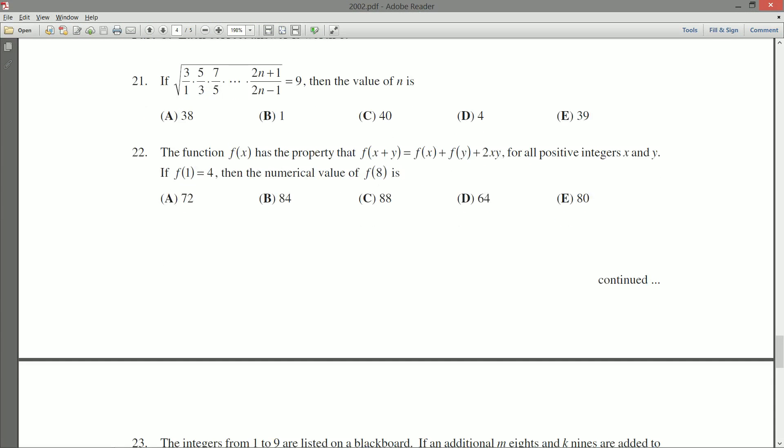The function f of x has the property that f of x plus y is f of x plus f of y plus 2xy for all positive integers x and y. If f of 1 is equal to 4, then the numerical value of f of 8 is, and then we have our five possible options.